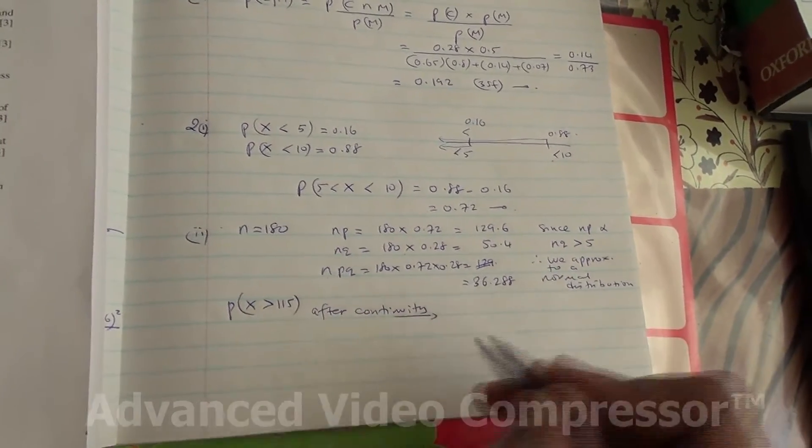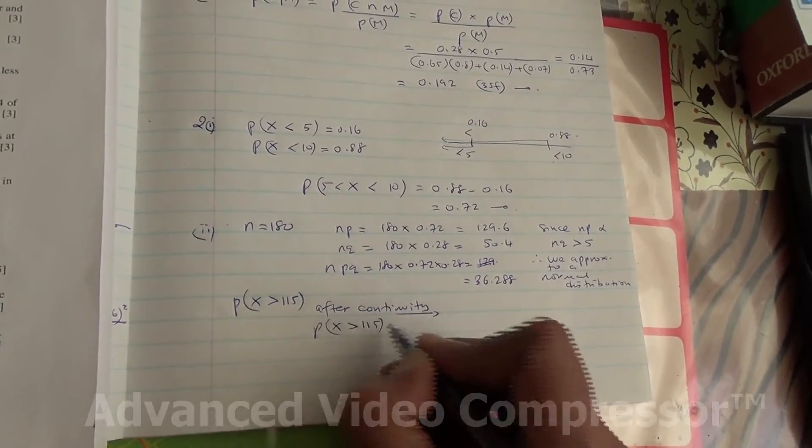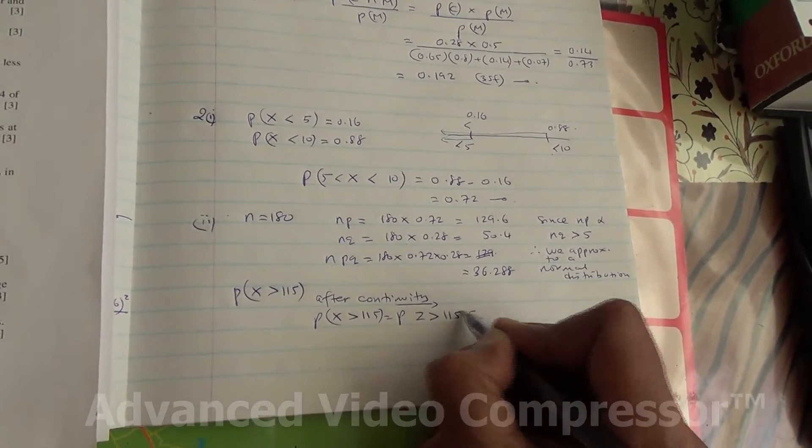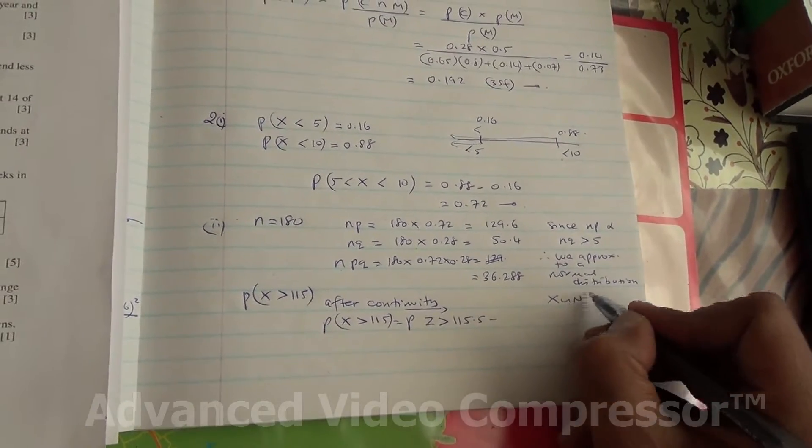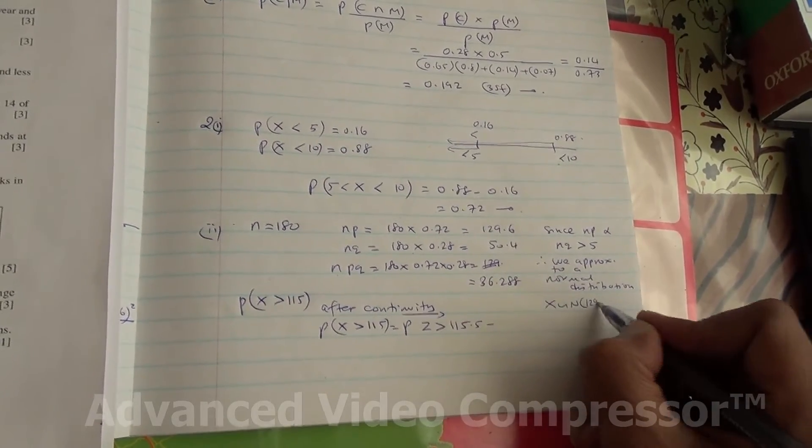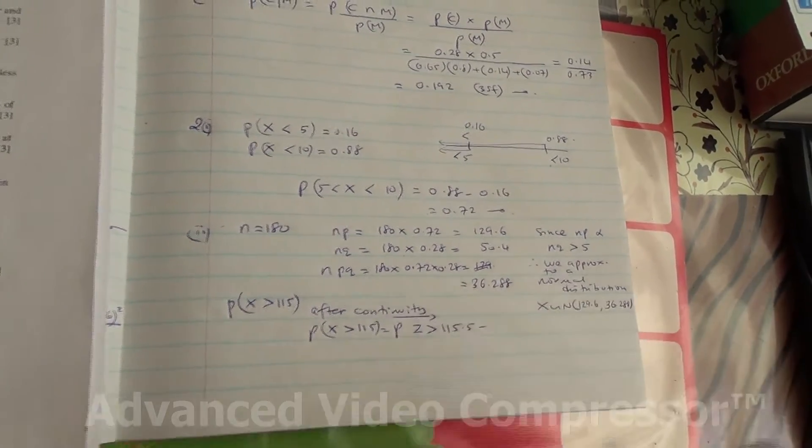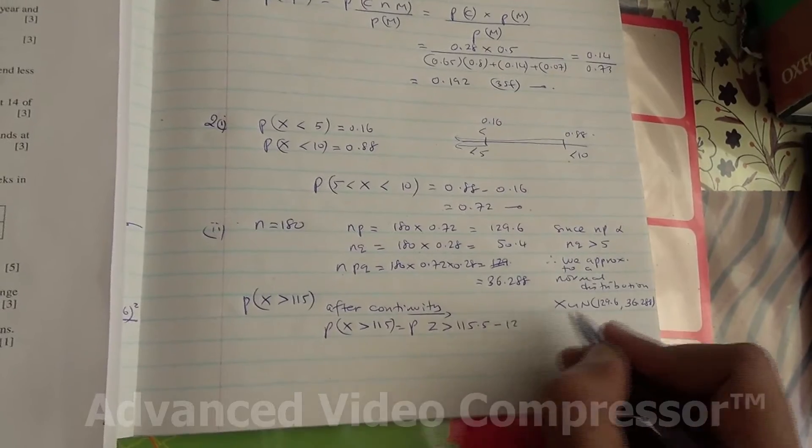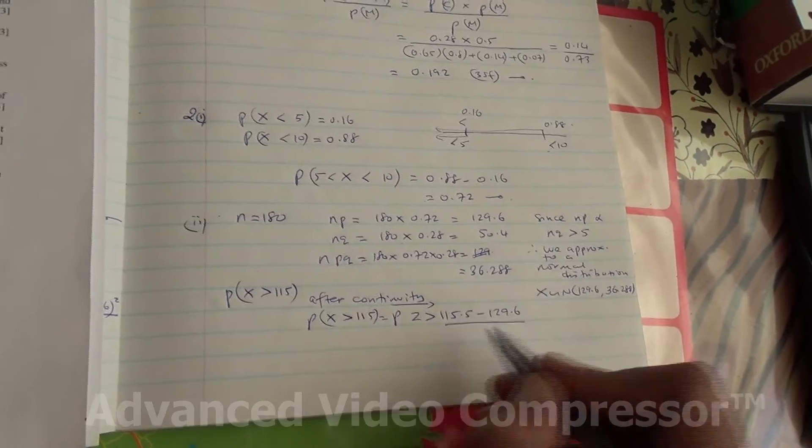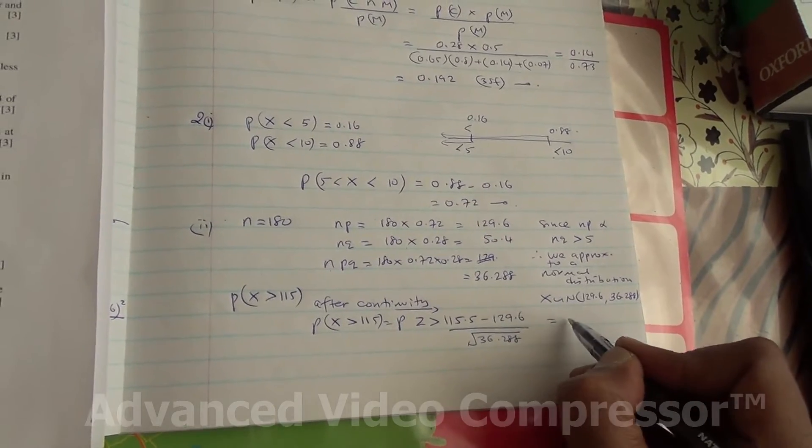After continuity correction, we are going to say that the probability of X being greater than 115 is exactly the same as probability of Z being greater than 115.5 minus the mean, because X is following now a normal distribution. We have NP, which is 129.6. Our variance is 36.288. Therefore, this is 115.5 minus 129.6 divided by the standard deviation, which is the square root of 36.288.